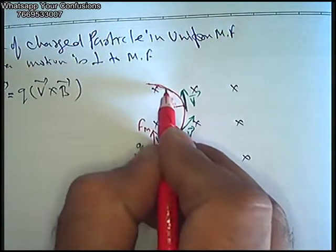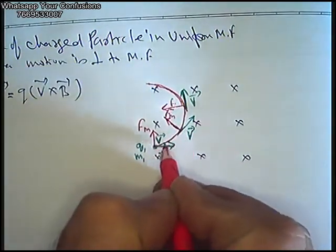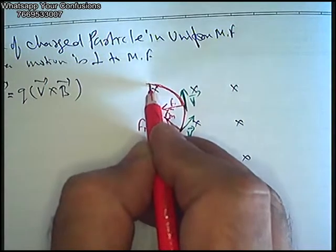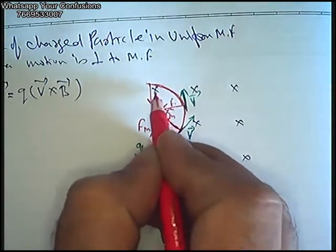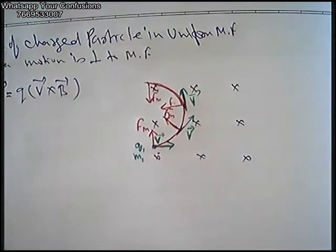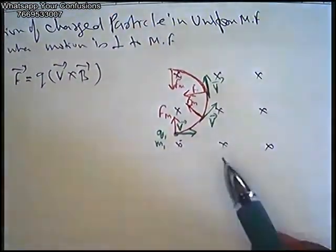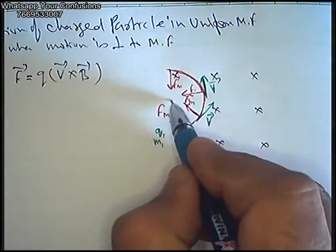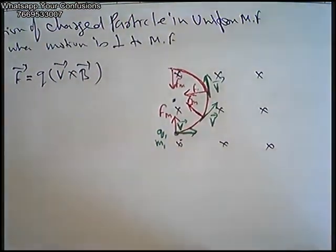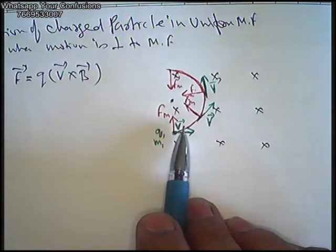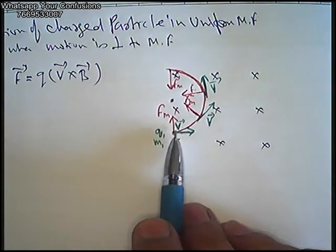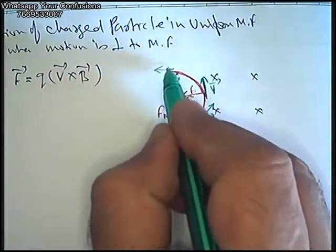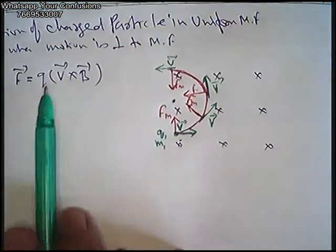So why does the particle move in a circle? Because the force vector is always perpendicular to the velocity vector. When a perpendicular force acts on a particle — a force perpendicular to velocity — that force starts acting as a centripetal force, whose direction is always toward the center. Under the influence of this centripetal-like force, the particle's motion becomes circular.